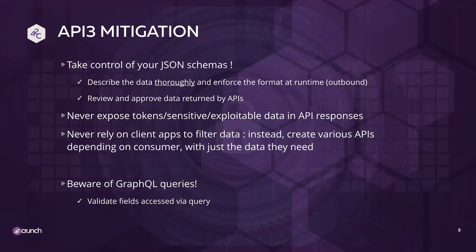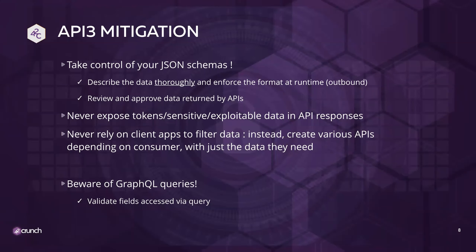There's no magic answer for fixing these issues except understanding and controlling what data we return and whether it's allowed in a response. We need governance of that information. It's tempting to have one endpoint returning all kinds of data usable in multiple cases — Uber was sending back 150 lines of JSON in a profile API call. It's easier from a development perspective, but we should have various endpoints for different operations depending on the data we want to expose.